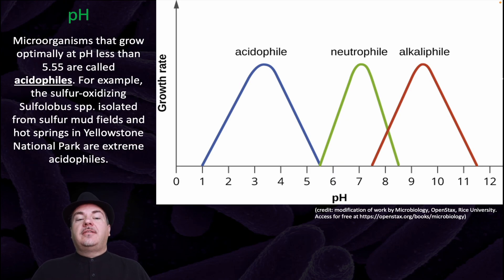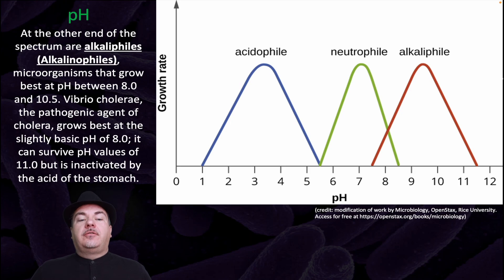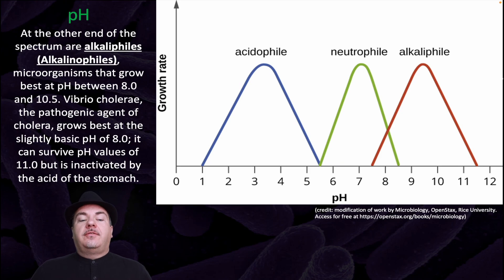Microorganisms that grow optimally at less than pH 5.5 are called acidophiles. For example, the sulfur-oxidizing Sulfolobus isolated from sulfur mud fields and hot springs in Yellowstone National Park are extreme acidophiles. At the other end of the spectrum are alkalophiles or alkalinophiles — microorganisms that grow at pHs between 8 and 10.5. For example, the pathogenic agent of cholera grows best at the slightly basic pH of 8.0 and can survive at pH values of 11, but is inactivated by the acid of the stomach.